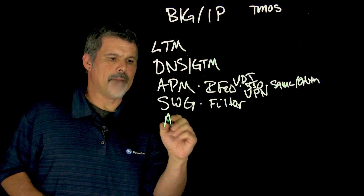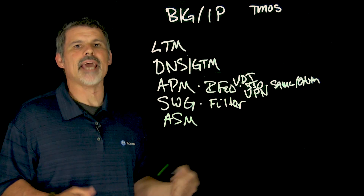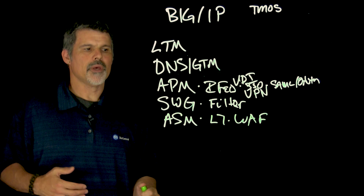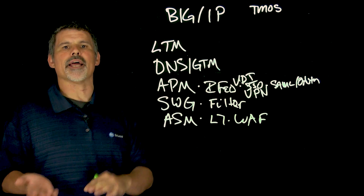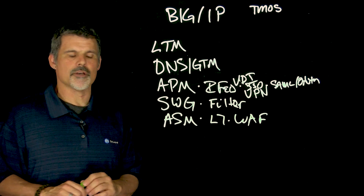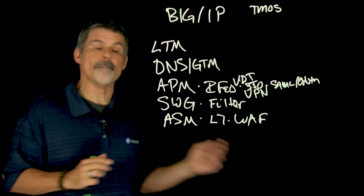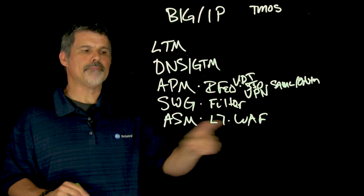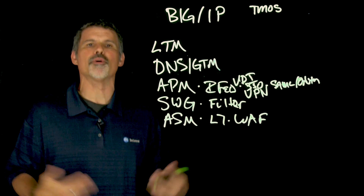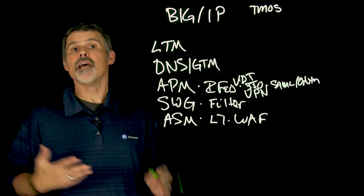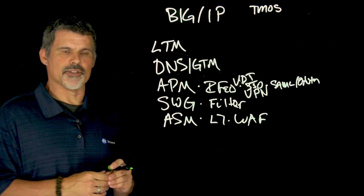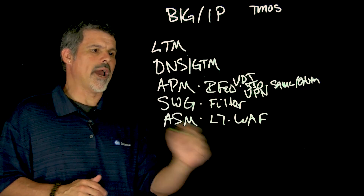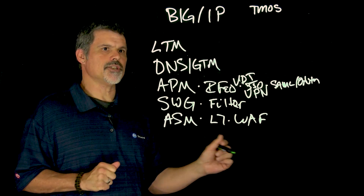Next is Application Security Manager, Big IP ASM. ASM is our Layer 7 Web Application Firewall. Network firewalls work on Layer 3 and Layer 4, handling network-type intrusions. But most attacks are targeted to the application, to Layer 7. Big IP ASM protects your applications against things like the OWASP Top 10, SQL injections, forceful browsing, and that type of attack.